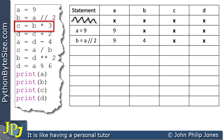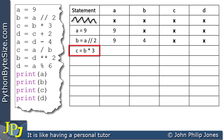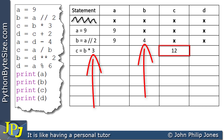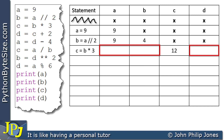We now go to the next program statement: C is assigned B multiplied by 3. We need to realize that B has the value of 4, and multiplying that by 3 gives us 12, which we place in the C column. A, B, and D are not affected by this statement, so the values 9, 4, and X are copied down from the row above.